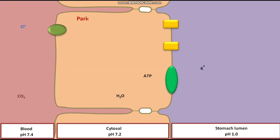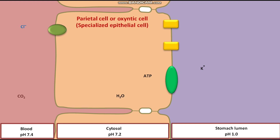This is the parietal cell, or oxyntic cell. The oxyntic cell is a specialized epithelial cell present in the gastric lining. In between two adjacent oxyntic cells, a tight junction is present. The apical membrane of an oxyntic cell has a H+/K+ ATPase.